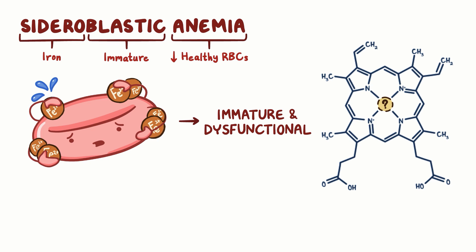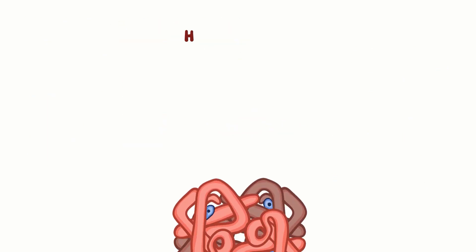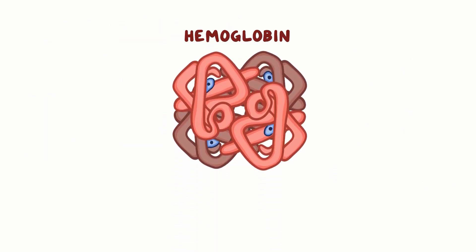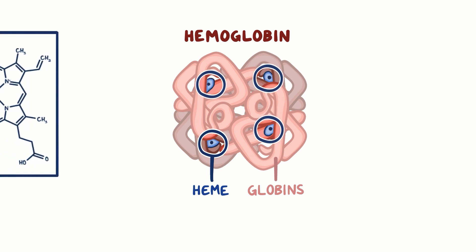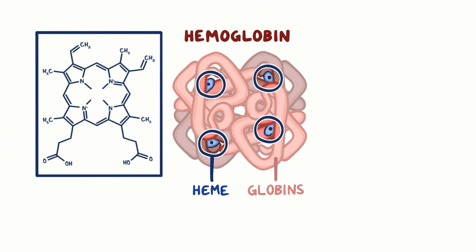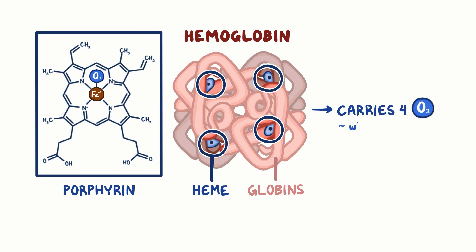In order to better understand sideroblastic anemia, we need to first take a look at hemoglobin, the main protein within RBCs that's responsible for carrying oxygen. Hemoglobin is made up of hemes and globins. There are four globin subunits, typically two alpha and two beta, and each one has its own heme group. This heme is a large molecule made up of four pyrrole subunits that forms a ring, and this structure is called a porphyrin. In the middle, there's an ionically bonded iron 2+, and the iron is what binds to and carries the oxygen molecule, so each hemoglobin can carry four oxygen molecules when it's fully saturated.